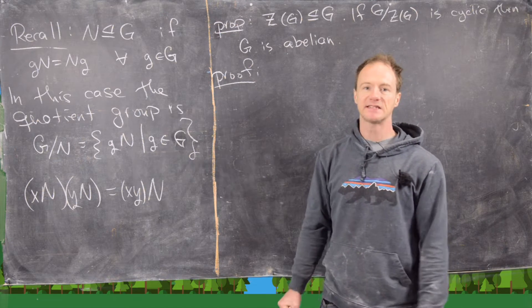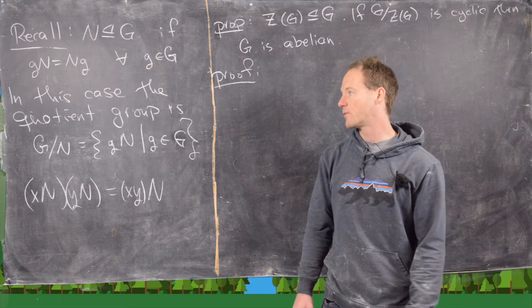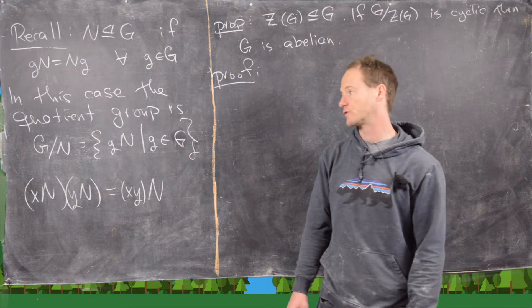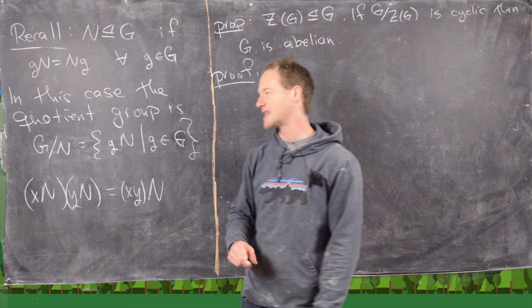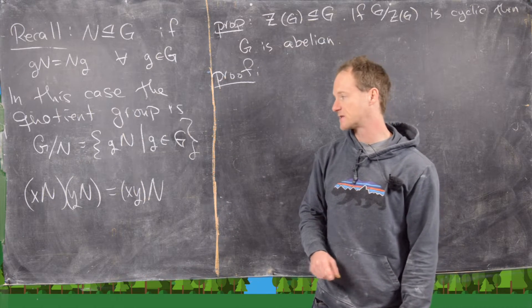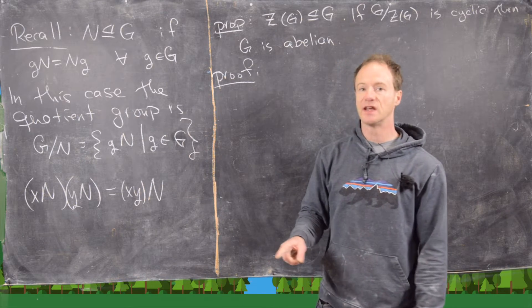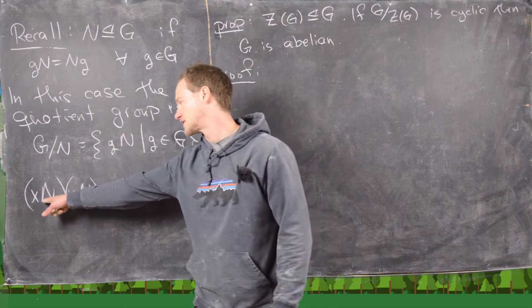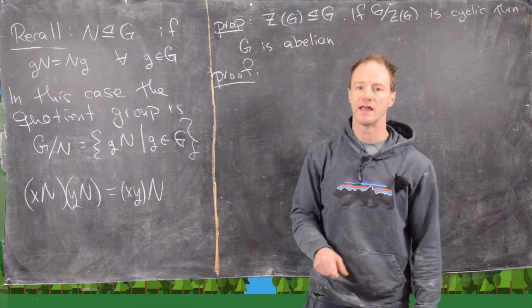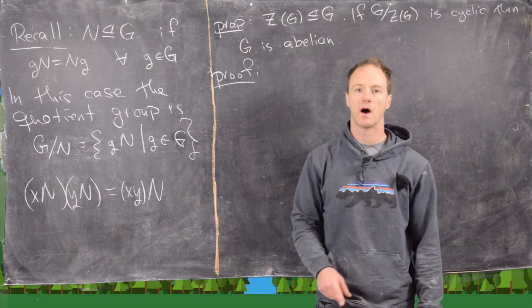And in the case that you have a normal subgroup, you can form this super important object called the quotient group, so it's given by the set of all left cosets, where the operation is the following: the coset XN times the coset YN is the coset XYN.